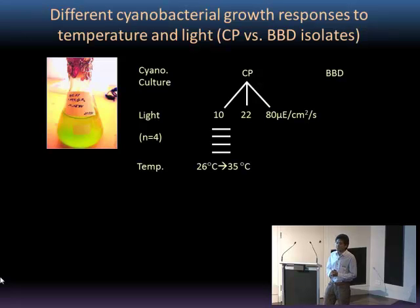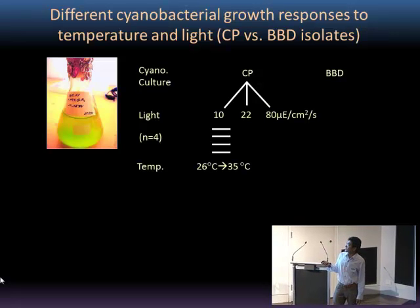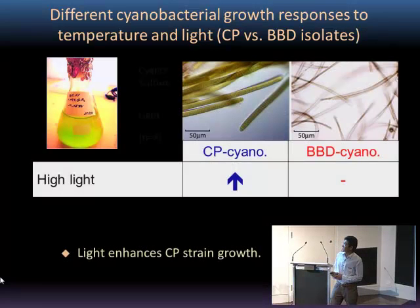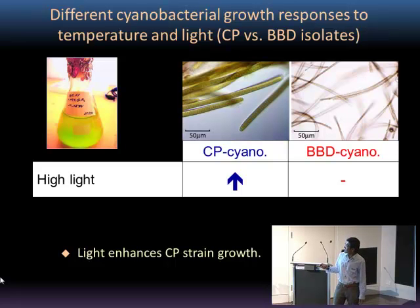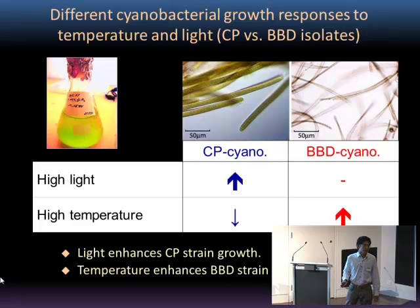To begin with, we isolated cyanobacteria cultures from both the cyanobacterial patches — the initial stage — and the developed disease, and we cultured them under different light conditions. During the course of culturing, we also changed the temperature to see how cyanobacterial strains react. What we saw was that high light increased the growth of the cyanobacterial patch strain in the earlier stage, but it didn't show any effect on the black band disease cyanobacterial strain. Whereas high temperature was good for the black band disease cyanobacterial strain, but bad for the cyanobacterial patch strain.